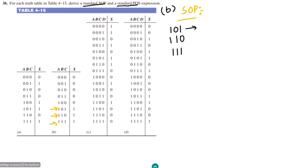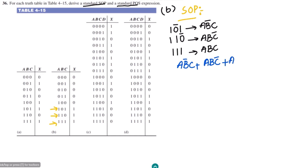To make each product term equal to 1, we complement the variables that are 0 in that term. So for 101, we get ab'c; for 110, we complement c to get abc'; and for 111, all variables are already 1, so we get abc. Adding these together, the sum of product expression is: ab'c + abc' + abc.